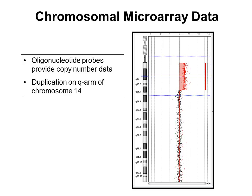This slide is an example of a duplication on the Q arm of chromosome 14 that was found by an oligonucleotide array. You can see that the probes in the red region are deviated to the right, which indicates a copy number gain. A deletion of this material would show a deviation of these same probes to the left side.